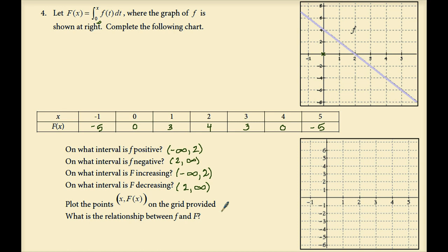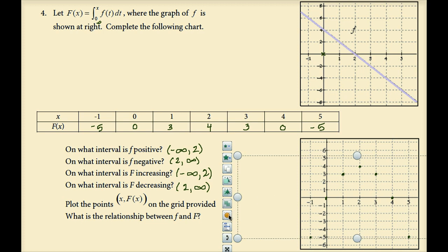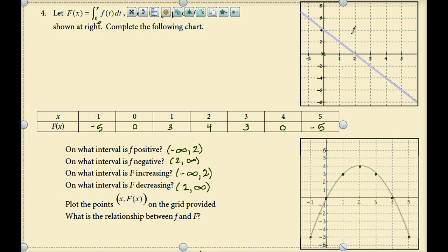Now let's plot the points (x, F of x): negative 1 maps to negative 5, 0 to 0, 1 to 3, 2 to 4, 3 to 3, 4 to 0, and 5 to negative 5. Connecting these dots gives a parabola.